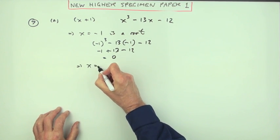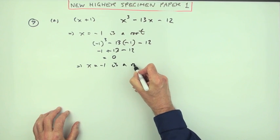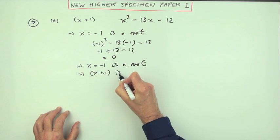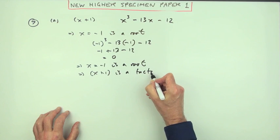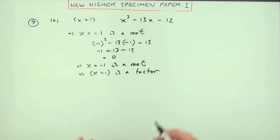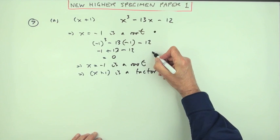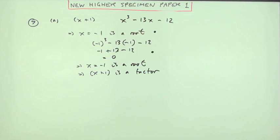Which means x equals negative one is a root, which means x plus one is a factor. And there's three marks. The marks would be one for realizing that x equals negative one is a root, one for evaluating that to get zero, and then one for the statement.